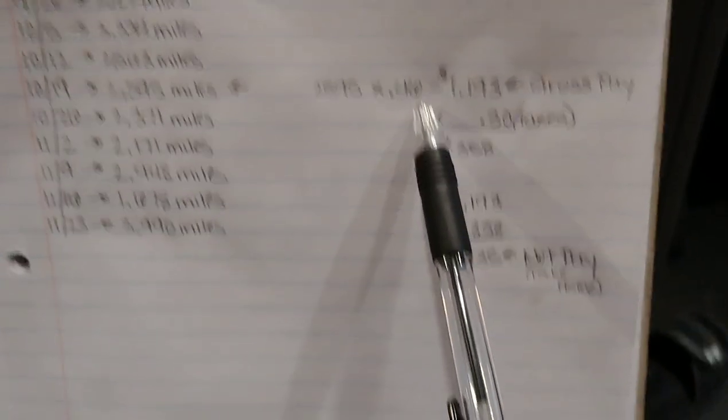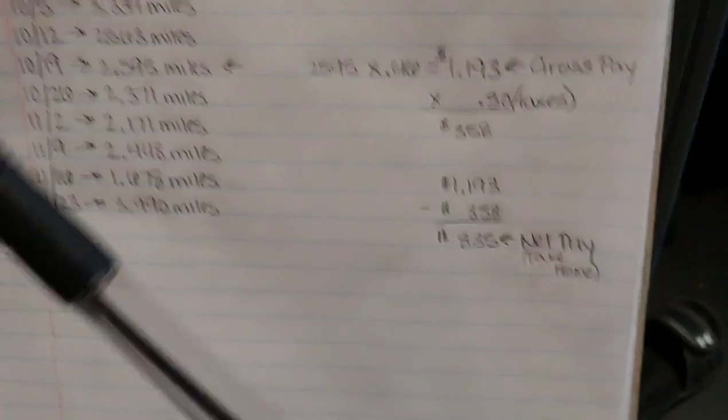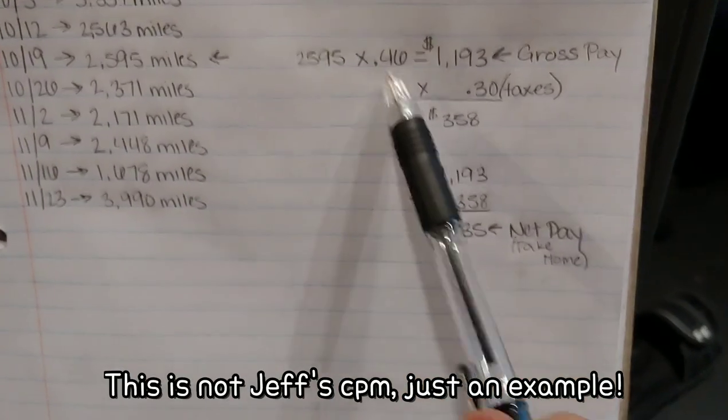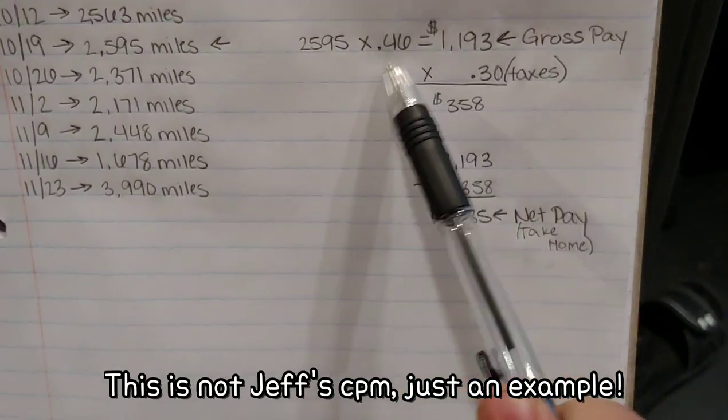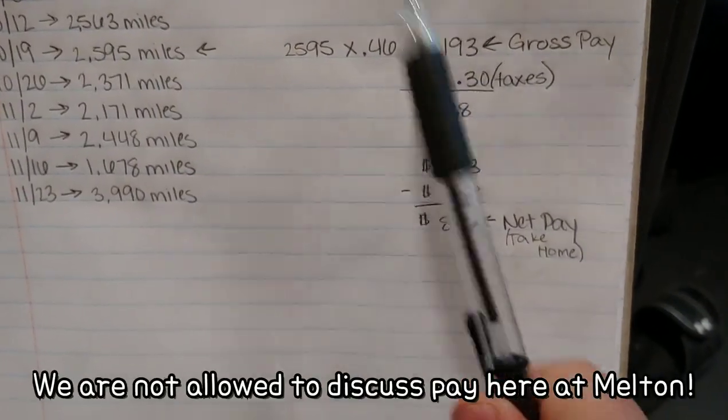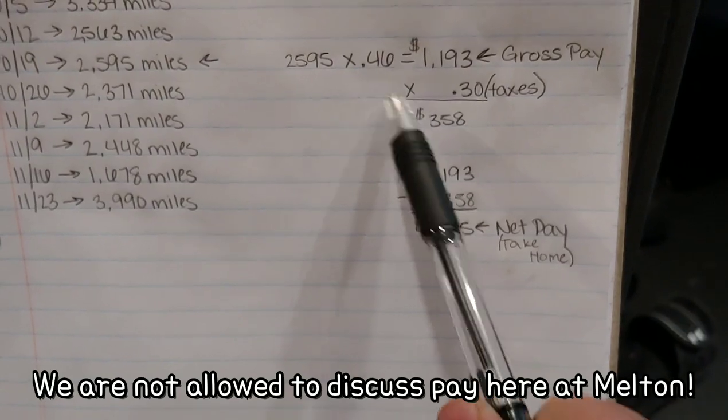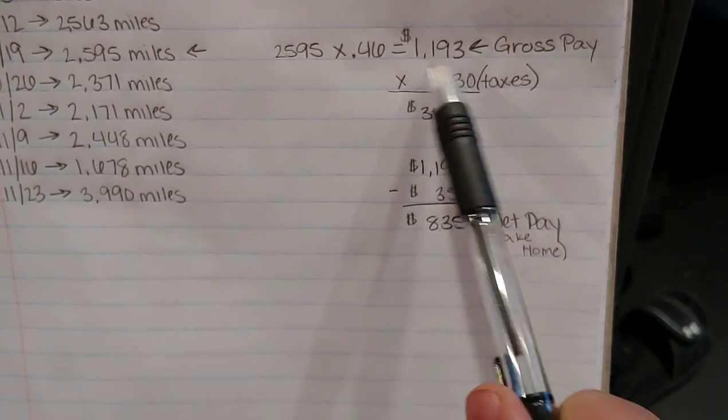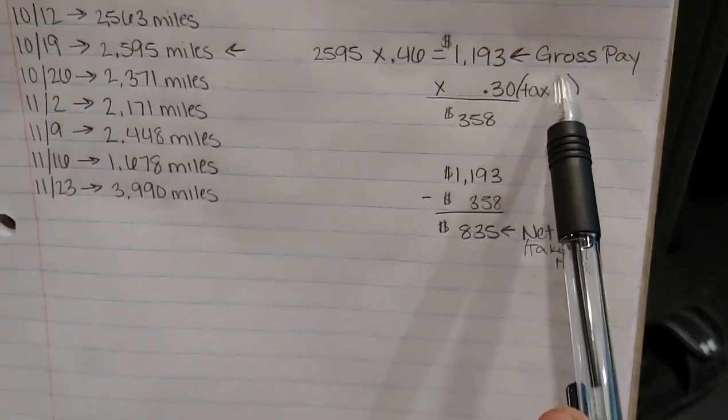So I'm going to do it by 46 cents because that's about the average. I mean, it's three cents more than students. So this is going to be probably about the median range. And you times it by 46 cents and it comes out to $1193. That's going to be your gross pay.